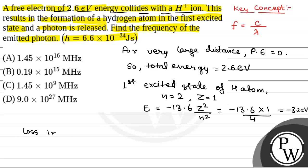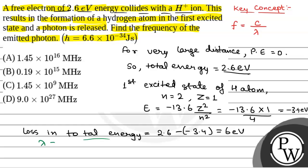The loss in total energy will be equal to 2.6 electron volt. This loss is emitted as a photon. We know that E is equal to hc by lambda, where the value of hc in electron volt nanometer is 1240.